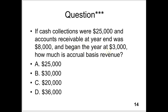But accounts receivable began the year at $3,000. That $3,000 was collected this year — because accounts receivable usually takes 30, 60, maybe 90 days to collect, so the beginning balance of $3,000 was collected by year-end. That means it's already in the $25,000. But it wasn't earned this year — it was only collected this year, so we subtract the $3,000. Not because of a formula, but because it was collected this year but earned last year. Otherwise, you'd be double counting it — counting it as revenue last year and this year.